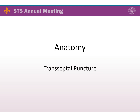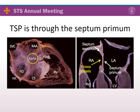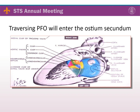We will first start with relevant anatomy to transseptal puncture. The fossa ovalis is the site of the transseptal puncture as viewed from the right atrial side. Another relevant clinical structure is the patent foramen ovale, which exists on the superior border of the fossa ovalis towards the superior vena cava. In the absence of an atrial septal defect, the transseptal puncture is through the septum primum. Occasionally, instrumenting the fossa ovalis will lead to traversal of the patent foramen ovale, entering the ostium secundum seen here on an anatomic depiction of the left atrium.